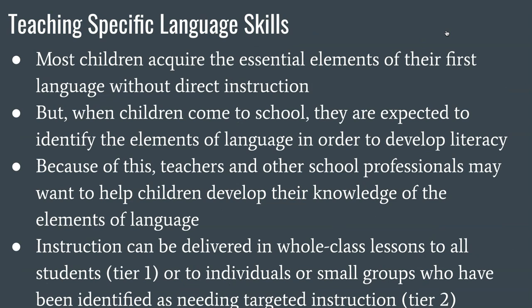Most children acquire the essential elements of their first language without direct instruction because they're hearing it all the time. But when children come to school, they're expected to identify the elements of language in order to develop literacy — all the phonological awareness skills and more. Because of this, teachers and other school professionals may want to help children develop their knowledge of the elements of language. Instruction can be delivered in whole-class lessons to all students, which would be Tier 1, or to individuals in small groups who have been identified as needing targeted instruction, Tier 2.